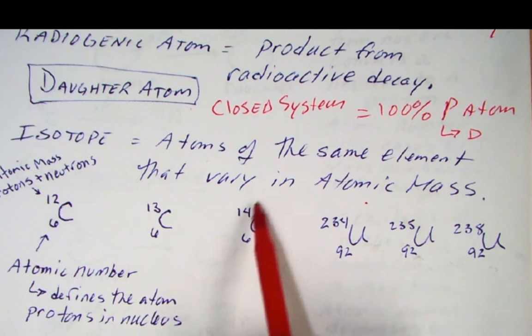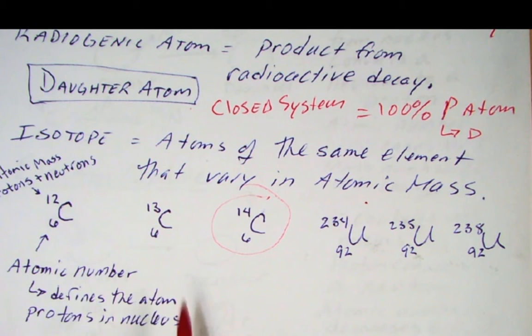So these are the three isotopes of carbon. This is the one that's radioactive right here. Remember, we talked about the carbon-13 ratios here for biomarkers. And then for uranium, you can see uranium has three isotopes as well. There's 234, 235, and 238. They're all uranium because each of these has 92 protons in the nucleus. They just vary in their number of neutrons.